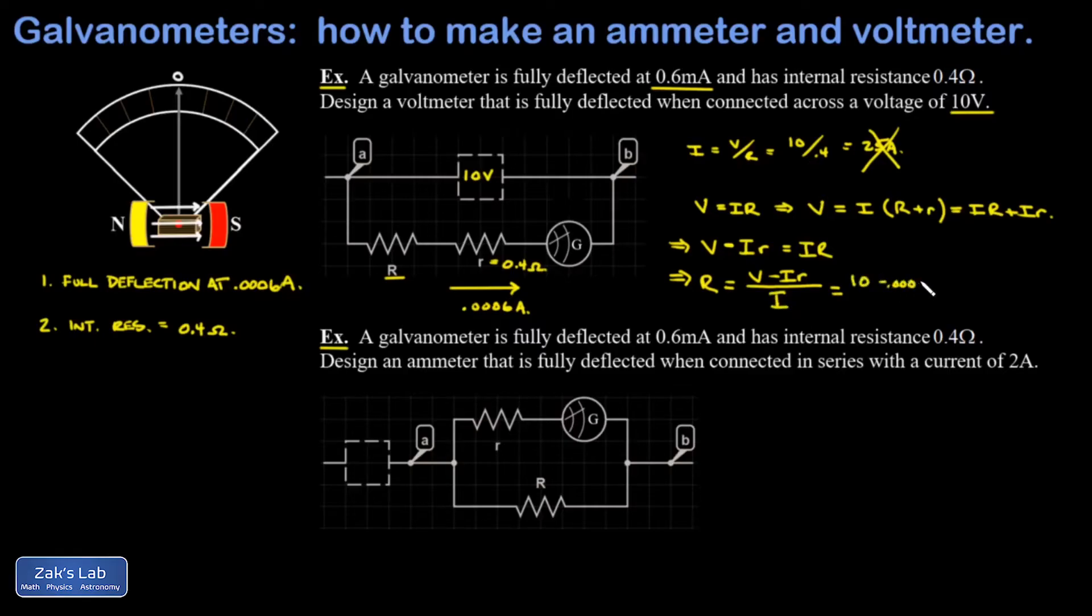I get 10 minus 0.0006 times 0.4 ohms internal resistance over 0.0006, and I end up with 16,666 ohms, which I'm going to write as 16.7 kilo ohms.